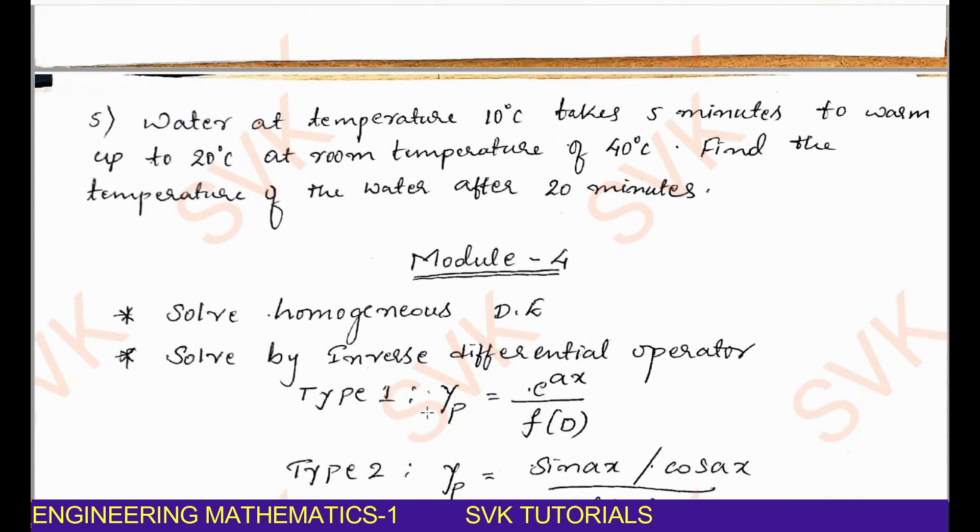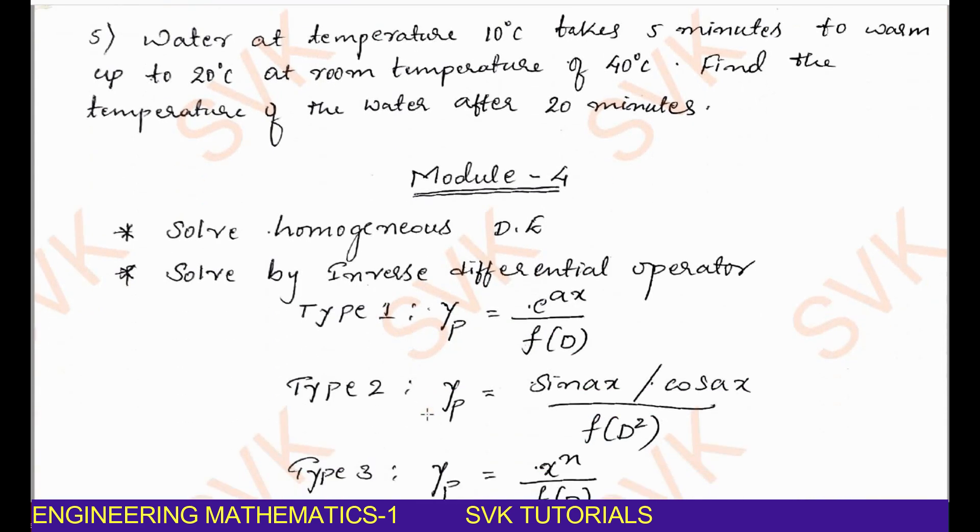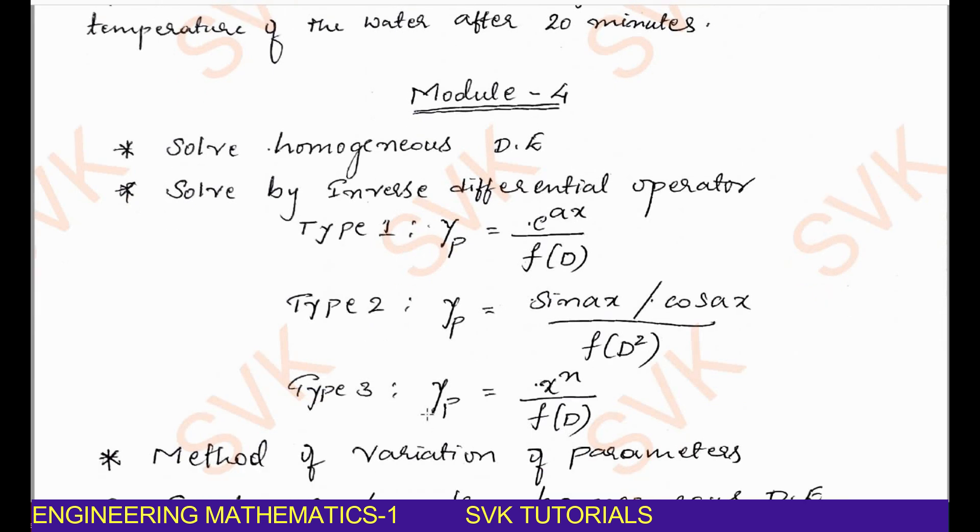Moving on to module 4. Module 4 and module 5, I have not listed any problems here. I have highlighted the topics to study for your examination. If you study these topics thoroughly, you can score maximum 20 marks in these modules. Solve homogeneous DE which is equal to 0, the problems of the form f of D on y equal to 0. Study those types of problems, you can score 6 marks. Similarly, solve the inverse differential operator of type 1, type 2, type 3. Along with homogeneous DE, if you study these 3 types, it is enough.